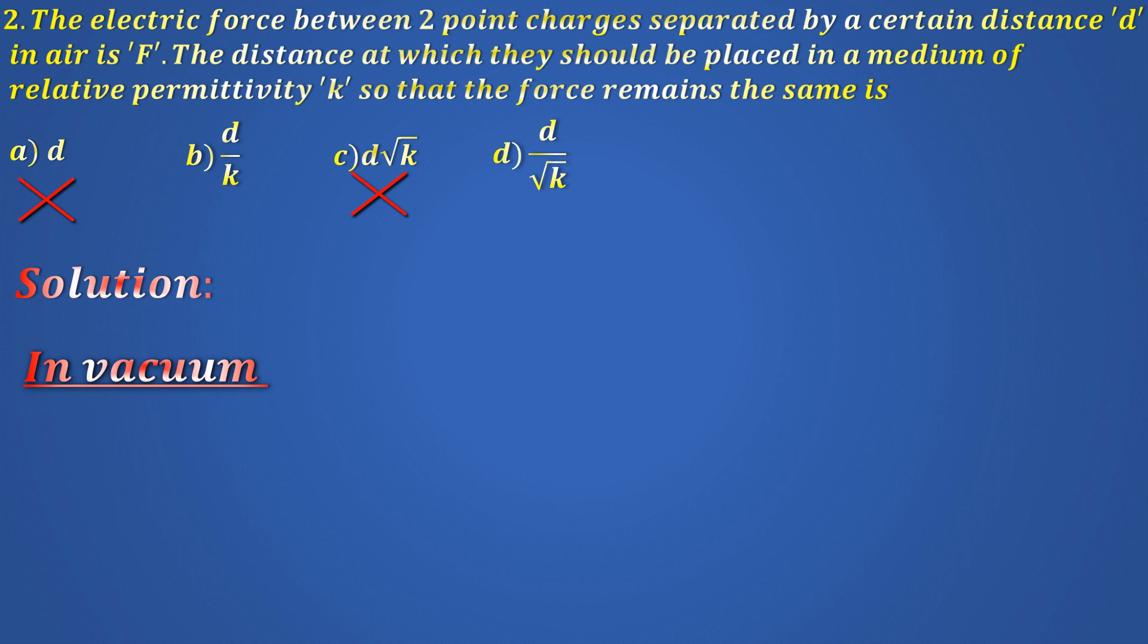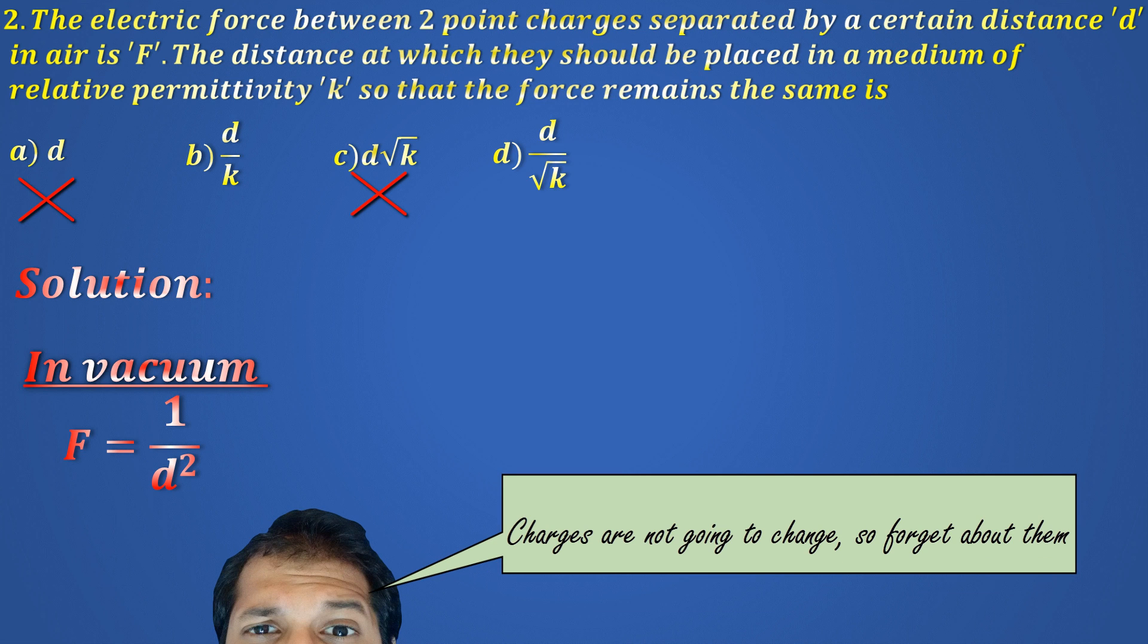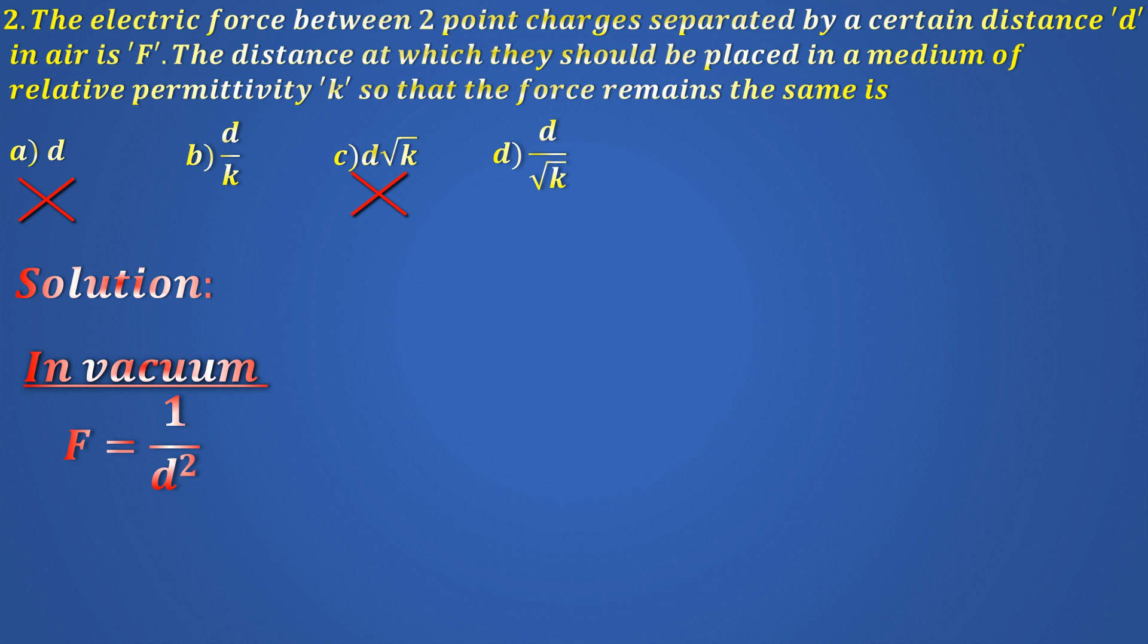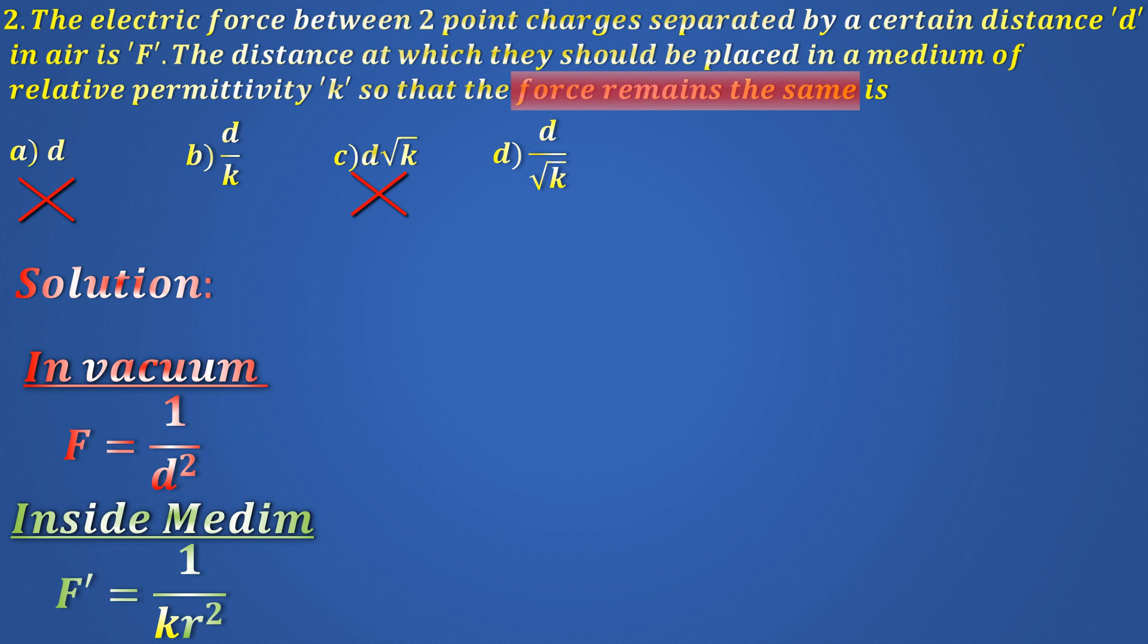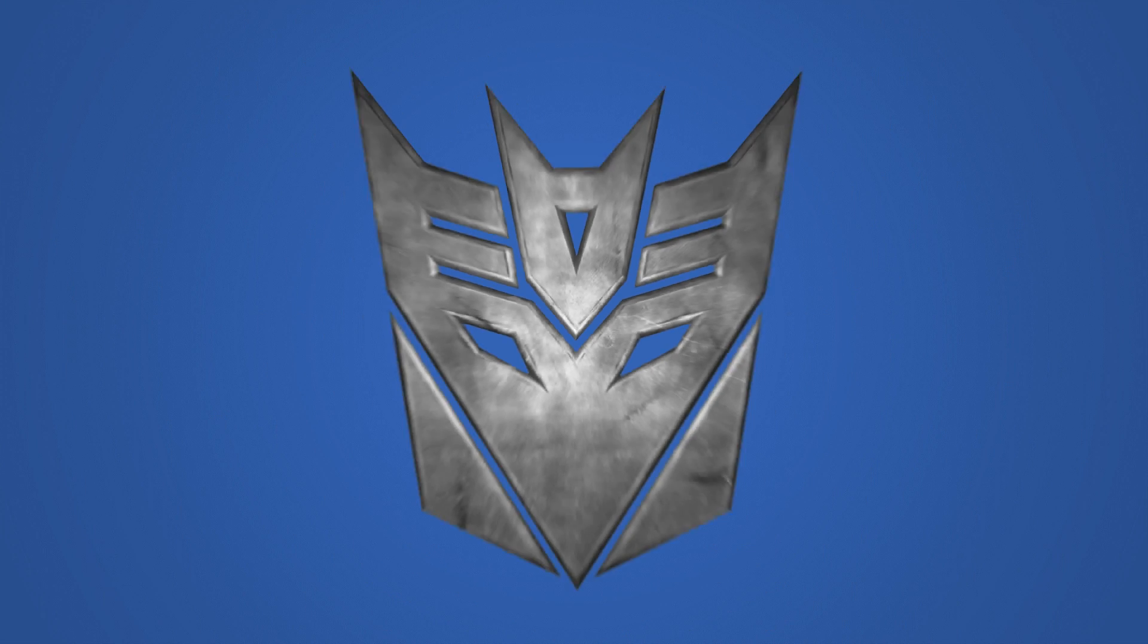The force in vacuum would be F equals 1 over D squared. The charges are not going to change, so forget about that. Inside the medium, the new force F' becomes equal to 1 over K R squared, where R is the new distance. But the two forces are equal. Therefore, 1 over D squared equals 1 over K R squared, making R equals D by root K. Okay, you are done.